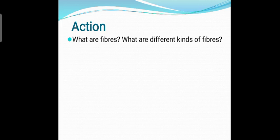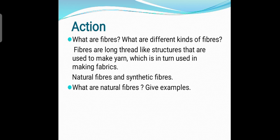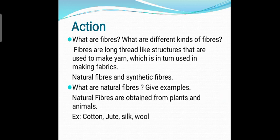Before doing the activity, I want to ask some questions. What are fibers? What are the different kinds of fibers? This topic you already read in the previous class. Fibers are long thread-like structures that are used to make yarn, which is in turn used in making fabrics. There are two kinds of fibers: natural fibers and synthetic fibers. Natural fibers are obtained from plants and animals — for example, cotton and jute are plant fibers, and silk and wool are animal fibers.